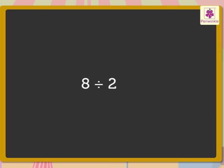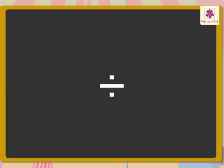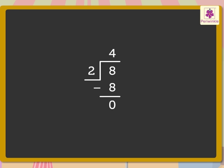This process of repeated subtraction is called division. We write it as: eight, then the division symbol, then two — equal to four. We read it as: eight divided by two is four. This symbol is used to show division. Look at this solved example on division.